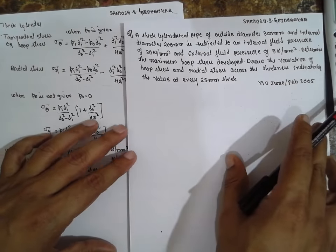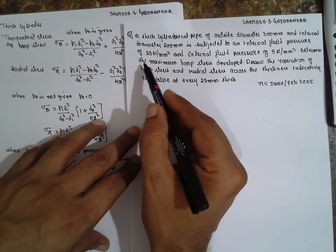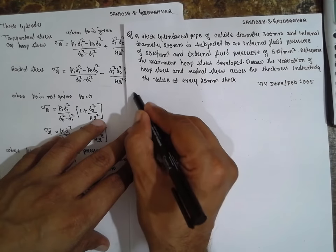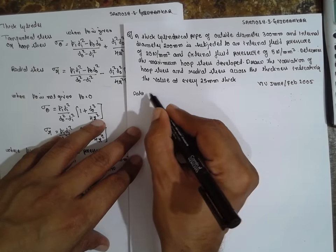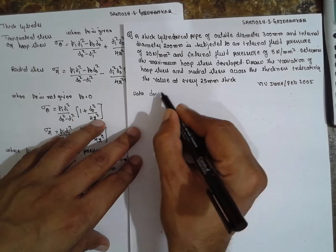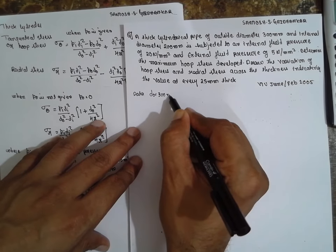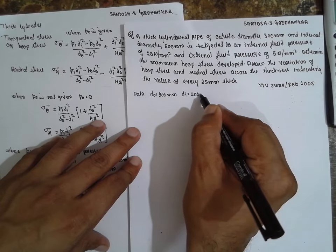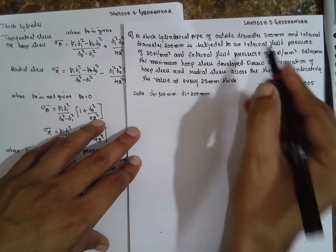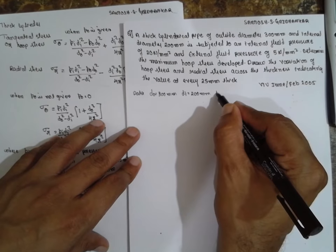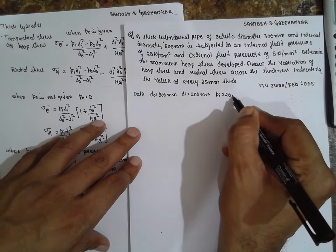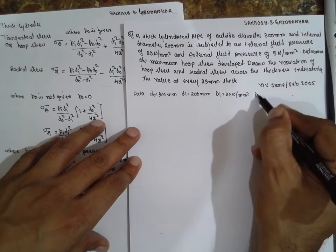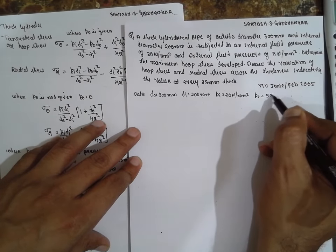Now this is the question. A thick cylinder pipe of outer diameter D₀ 300 mm and internal diameter 200 mm is subject to an internal fluid pressure of Pᵢ 20 Newton per mm square and external P₀ 5 Newton per mm square.